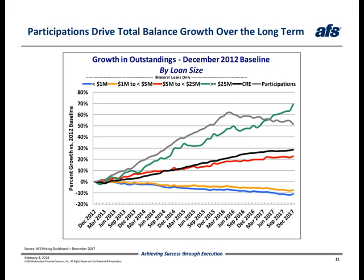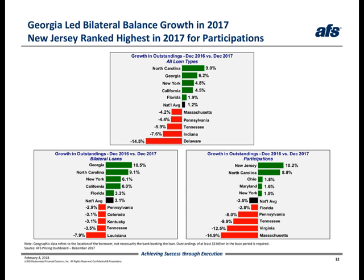The black line in the middle of the chart represents CRE bilateral loans. As you can see, CRE bilateral loans have been a steady performer for balanced growth, climbing 28% over this time period. Next, we'll leverage the pricing dashboard's drill-down capabilities to pinpoint specific geographic and industry drivers of balanced growth.